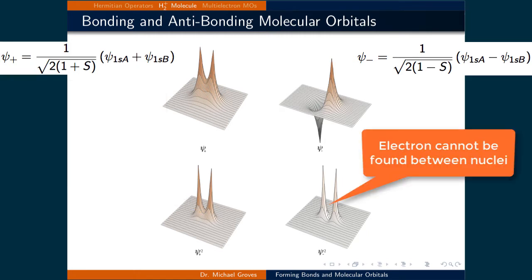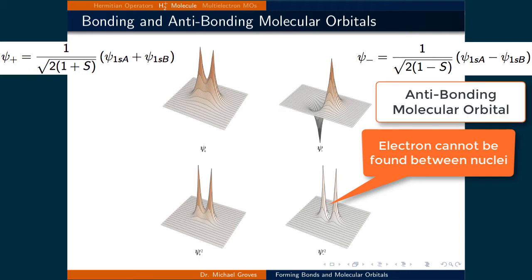In psi minus, the electron can never be found directly between the nuclei. Since the nuclei cannot equally share the lone electron, we call psi minus an antibonding orbital.